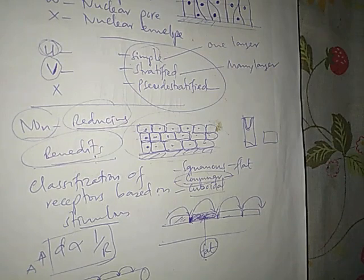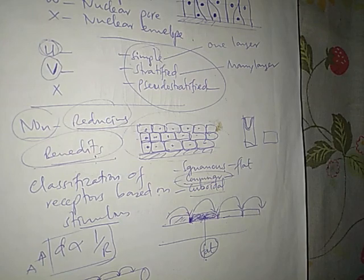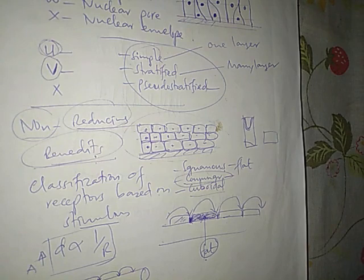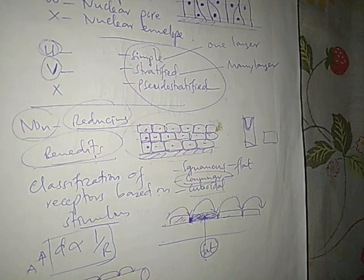Then question number six: state the function of the following neurons. The function of the central nervous system to the peripheral — or to the effector. Sensory neurons carry signals from the receptor to the central nervous system. Relay neurons are within the central nervous system.